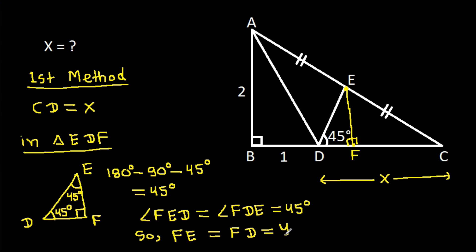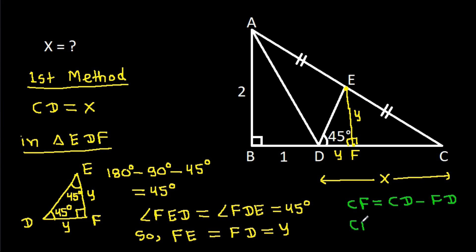Suppose FE is Y and FD is Y. Now, CF will be CD minus FD, so CF will be equal to CD is X minus FD is Y. So CF will be X minus Y.